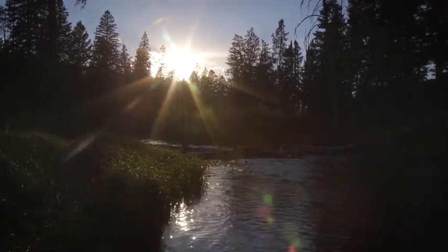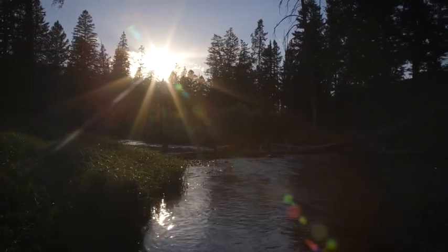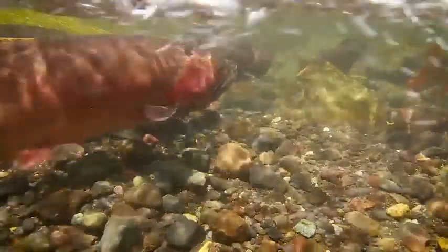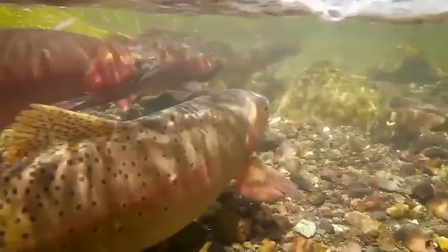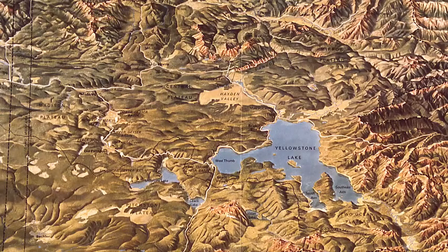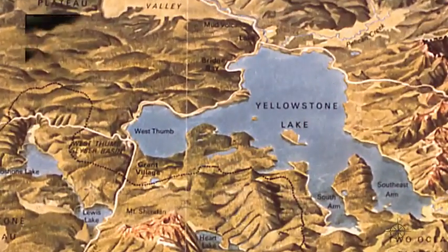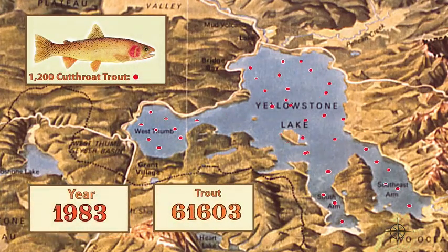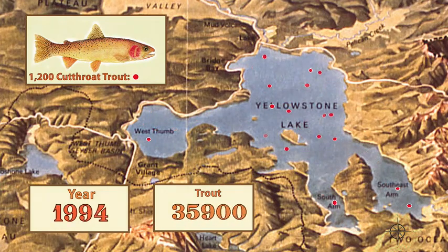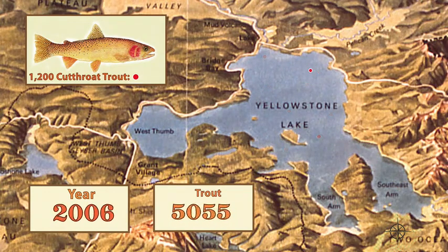An example of the cutthroat trout decline can be seen at one of the primary spawning streams called Clear Creek. We have counts of spawning cutthroat trout at Clear Creek dating back to the 1940s. Around 1980, nearly 70,000 fish were counted ascending Clear Creek to spawn in the spring. That declined over time due to the lake trout, to the point where in the late 2000s we counted only about 600 fish ascending Clear Creek that year.